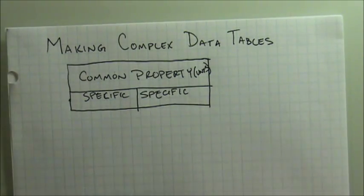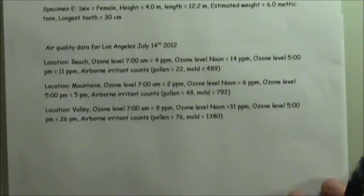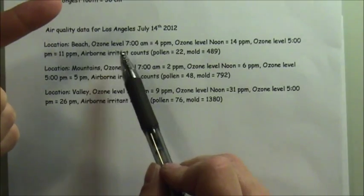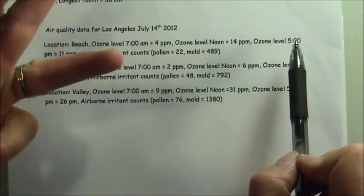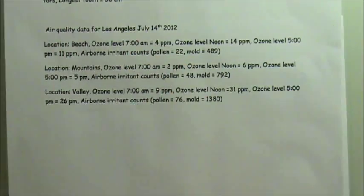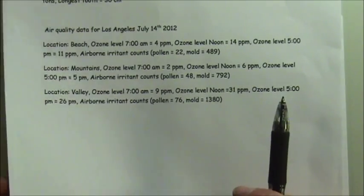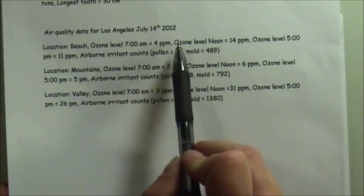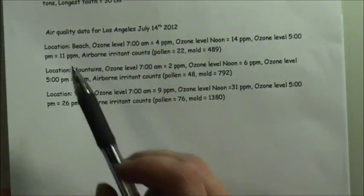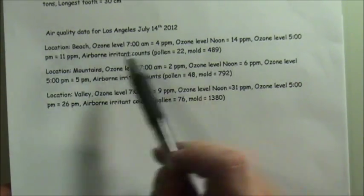So let's go ahead and sketch out what it's going to look like for our set of data. So for our set of data, there are six pieces of information that need to make their way into the table. The location should be there. The ozone level at 7, at noon, and at 5 p.m., and the pollen count, as well as the mold count. So that's six different pieces of information that need to be in the data table. And so, if you notice, the ozone level shows up three times, and airborne irritants is going to have two columns underneath it. Whereas location is not a common property in the sense that it doesn't repeat throughout the data.